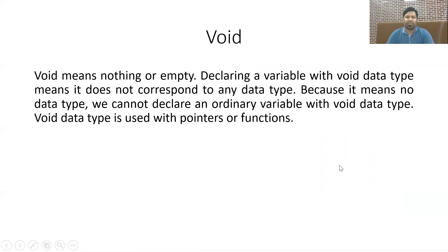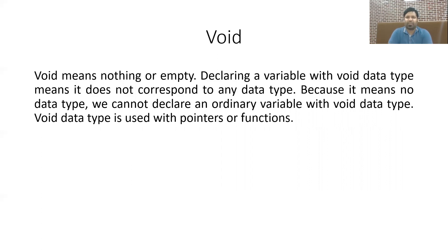Void basically means nothing — void data type means no data type. Under normal circumstances you do not create a normal variable of void data type because it is meaningless. Void is used in two scenarios: first, when you want to create a generic pointer that belongs to no specific data type; and second, when defining functions, void can be used as a return type to indicate the function will not return anything.